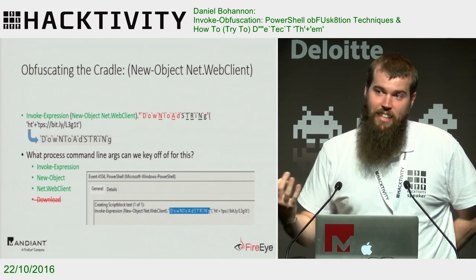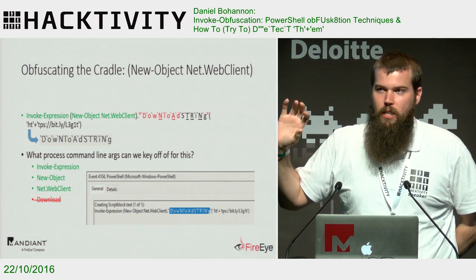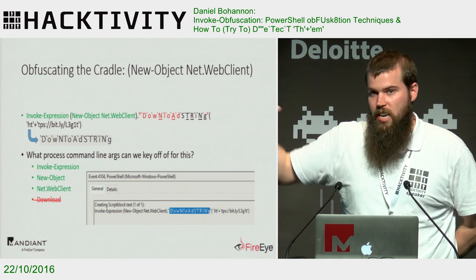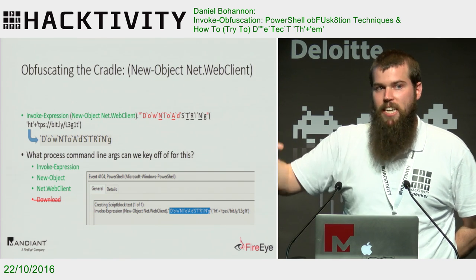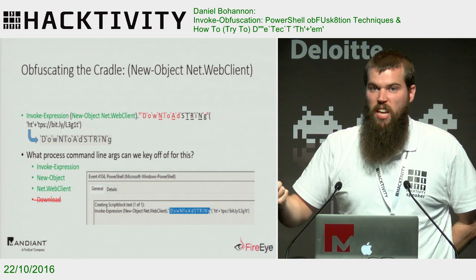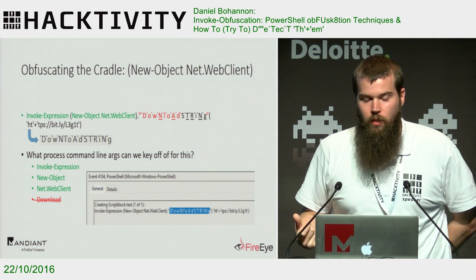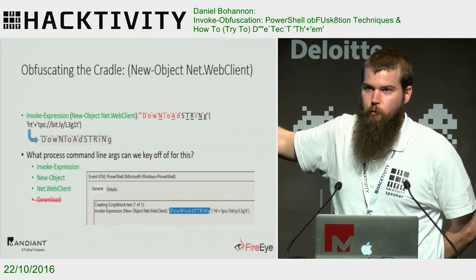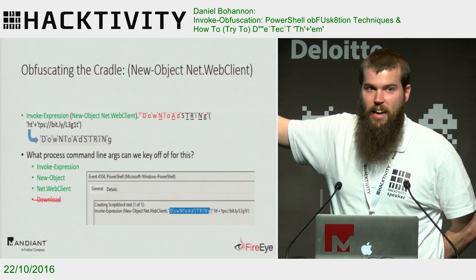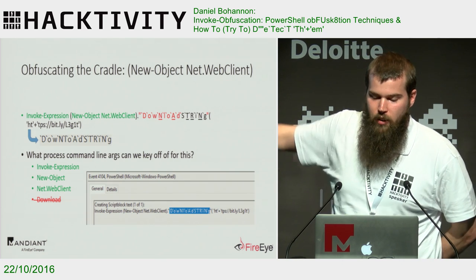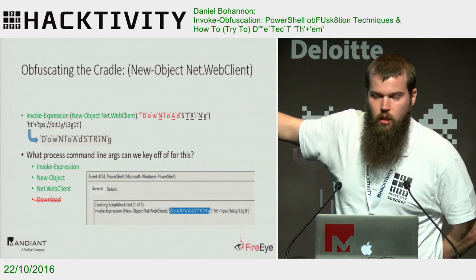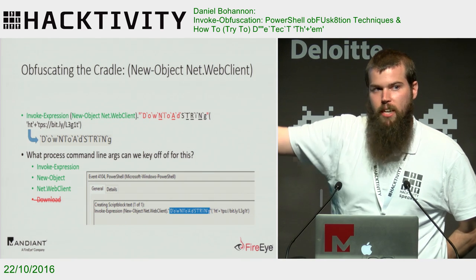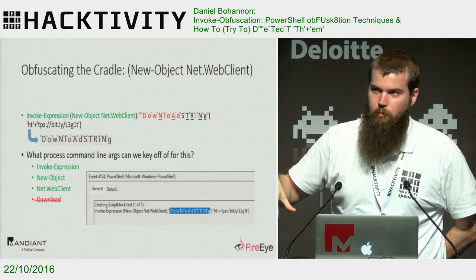Script block logs will show you every layer of deobfuscation being passed into an invoke function. However, at this layer we're not passing anything into an invoke function — it is the command itself. So you can see the ticks are still there, concatenation and whitespace are all still there in both command line arguments and script block logging.